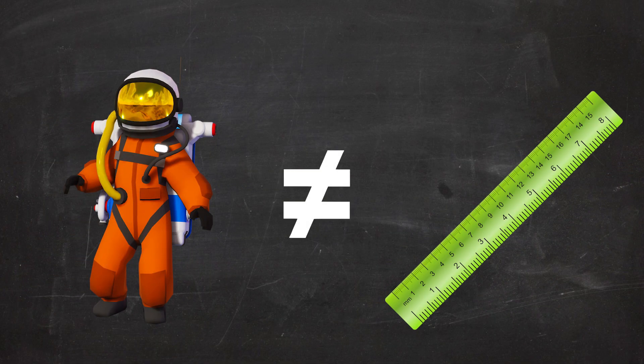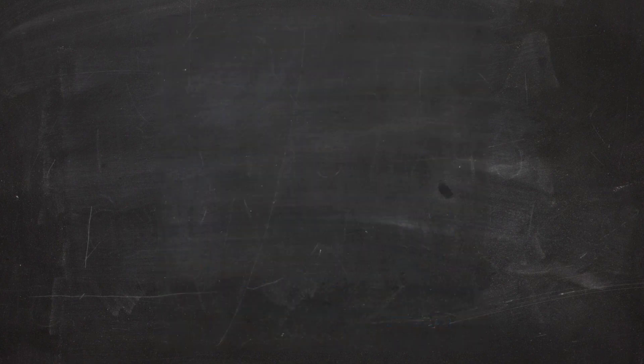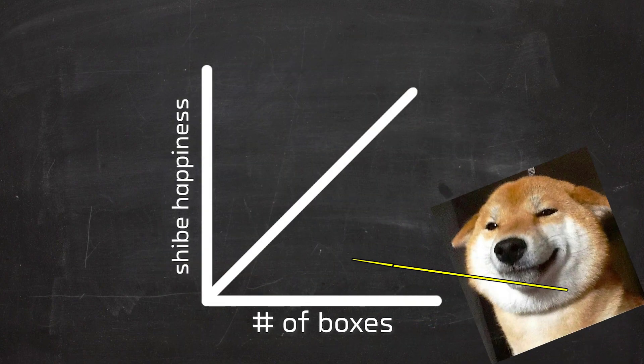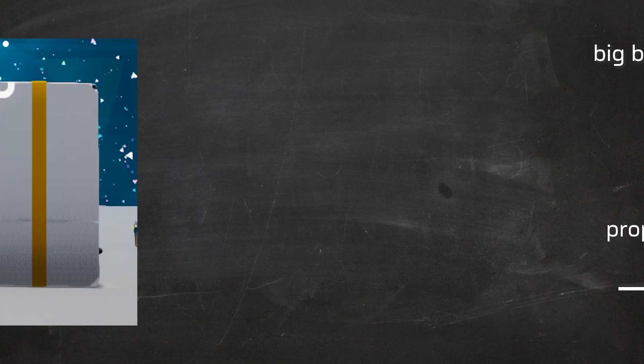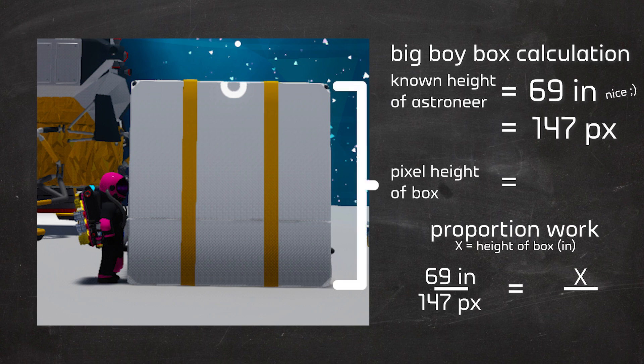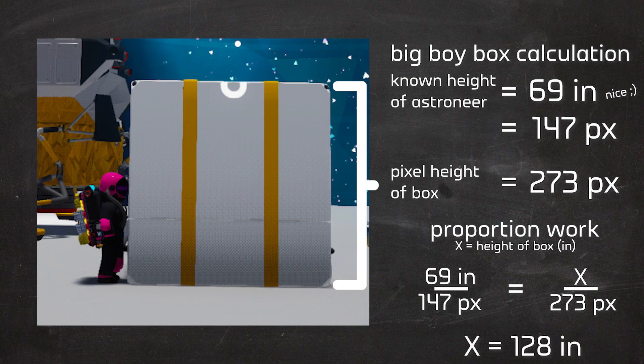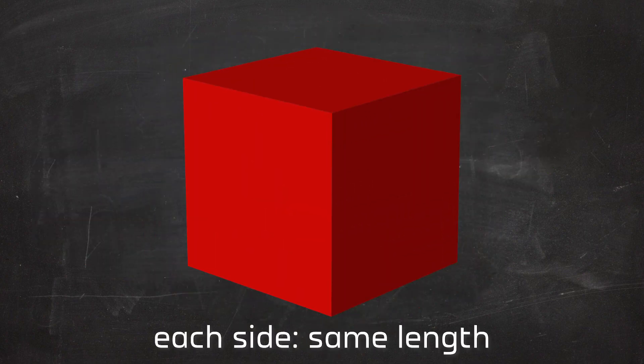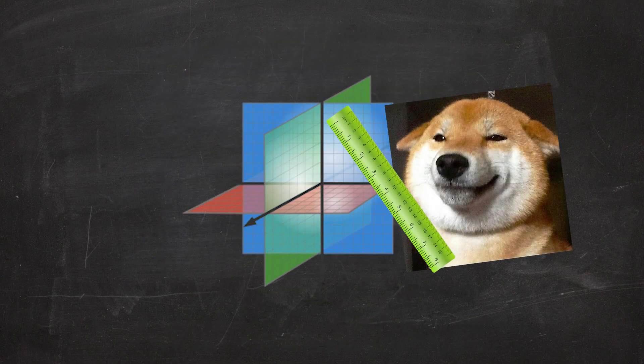Now, using the Astroneer as a ruler probably isn't the best idea. What we should do is use the perfect cubic measurements this game has ever so nicely given to us, which is the boxes. These boxes made my life so much easier. I got the height of the big boy box using the same method of getting the height of the Astroneer. I used the known height of the Astroneer, which was 69 inches tall, nice, that measurement in pixels, which was 147, and the pixel height of the box, which was 273, to get 128 inches, which is 10 feet and 8 inches. We now have a ruler! This is so useful to me because it's a cube. Each side is the same value in terms of size. This will make my life much easier when trying to measure something in a 3D plane.